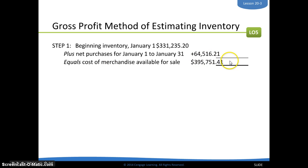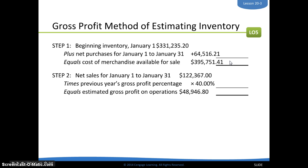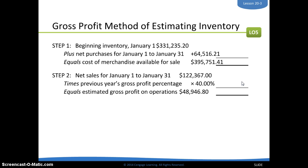We're going to use this merchandise available for sale number a little bit later. Step two: you're going to take your net sales for January from the 1st to the 31st. Net sales means sales less sales discounts less sales return allowances. You're going to multiply those net sales times the previous year's gross profit percentage, which you'll get from your income statement — or if you're looking at directions, they'll probably give it to you in the instructions. That gives you the estimated gross profit on operations.